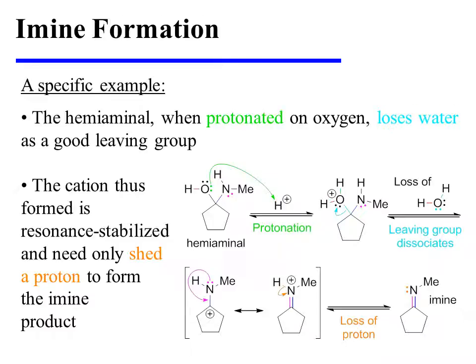The hemi-aminal, when protonated on oxygen, loses water as a good leaving group. The cation that is thus formed is resonance-stabilized and need only shed a proton to form the final product, the imine.